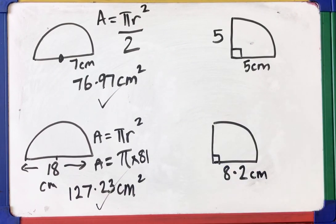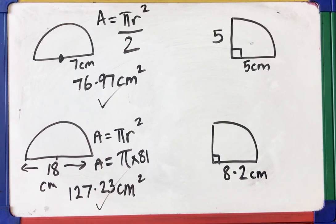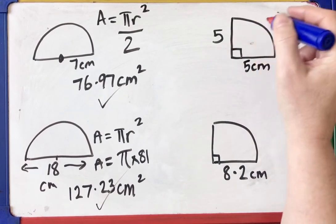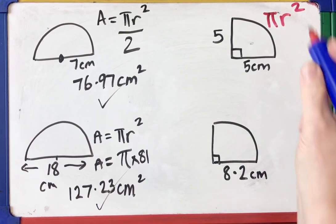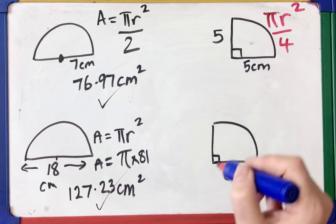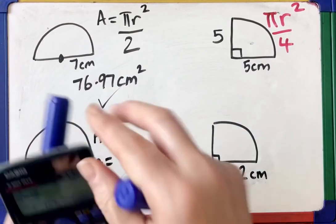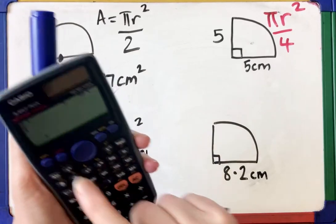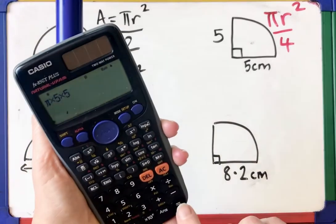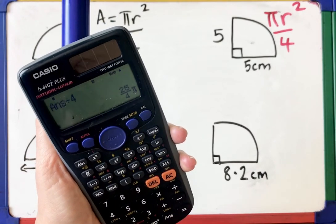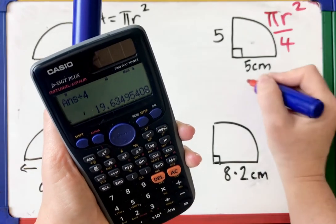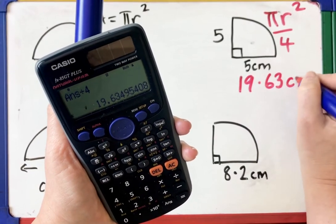For the quadrant with radius 5: the full circle is pi r squared. Shift pi times 5 times 5 gives 25 pi. Divide by 4 and you get 19.63 centimetres squared.